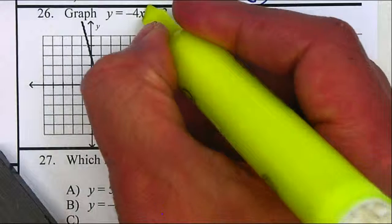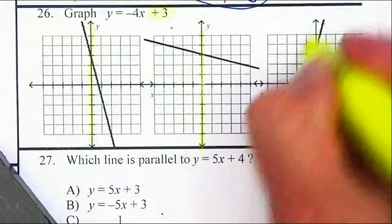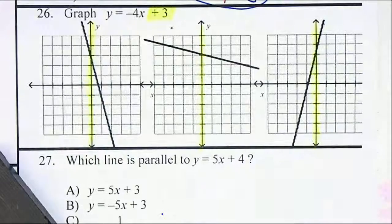So from here I'm going to highlight my y-intercept. My letter B is the y-intercept, which will be 3.